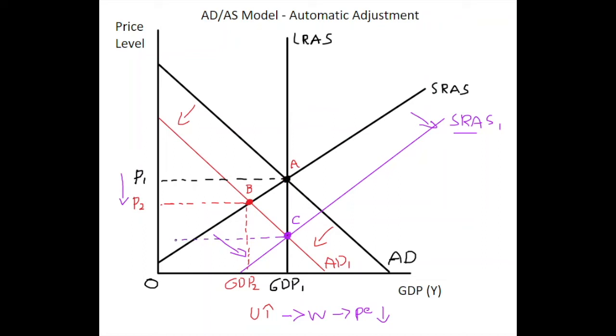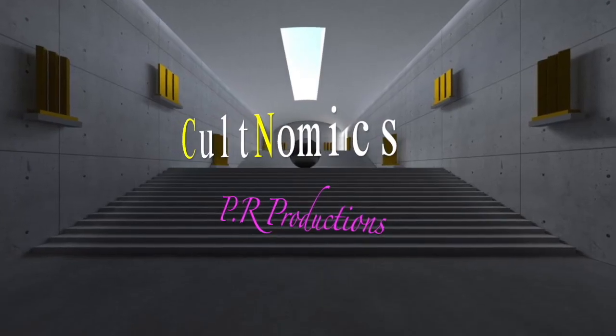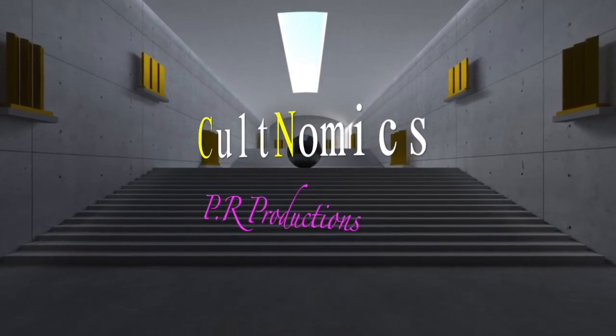And following this recessionary gap, what we see is the real output level returns eventually and it is at a reduced price level. So prices fall even further, the economy becomes more competitive, and GDP returns to its GDP1 level once again. I hope you call back to Cultnomics soon, bye for now.